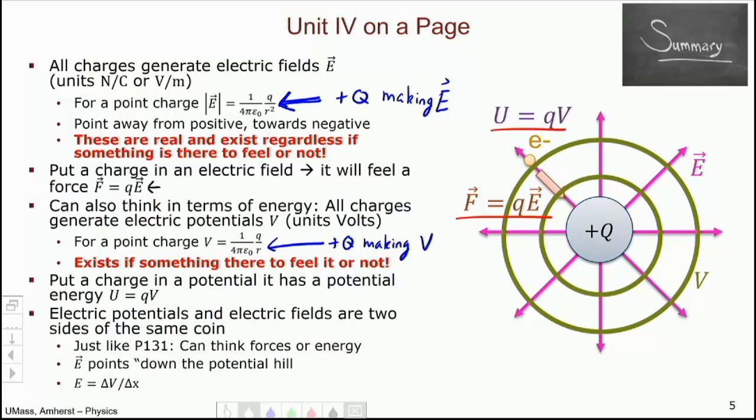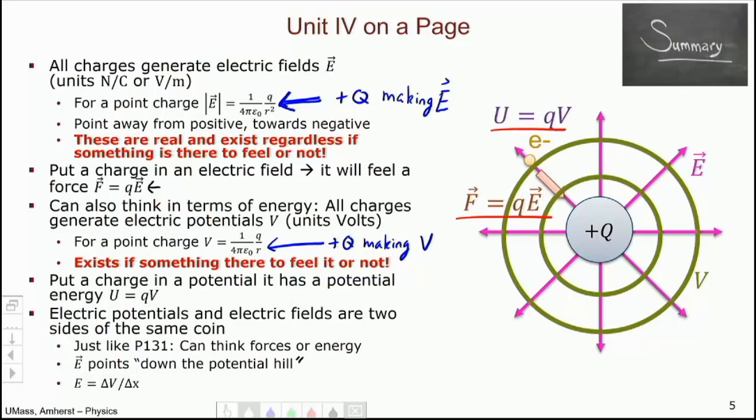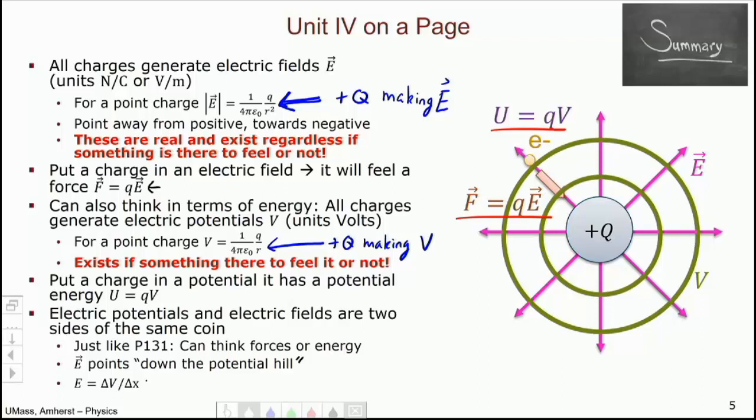I can think about this thing that Q is making, either in terms of potential or in terms of electric fields. They're the same. They're two sides of the same coin. The electric field points down the potential hill. This is a thing that will be described more in your reading. And you can actually convert from one to the other. You can convert from E to V and back.